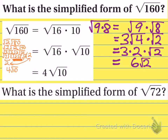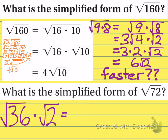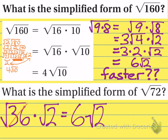This is the slightly longer way to do the problem, because there is a better choice for the perfect square that divides 72. If you picked 36 and 2, you made a good decision, because the square root of 36 is just 6, and you're done very quickly. Again, for the third or fourth time — when you find the largest perfect square that divides the number, you get the answer as quickly as you can possibly get it.